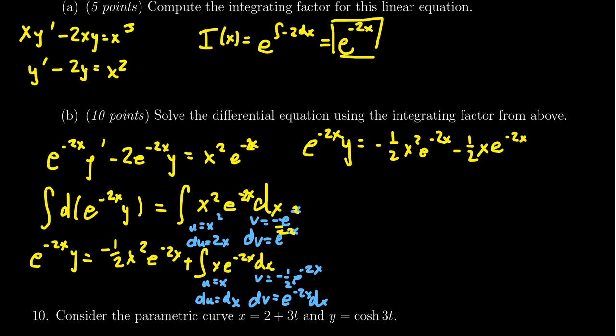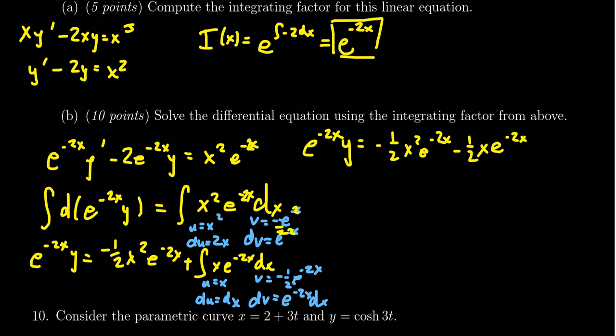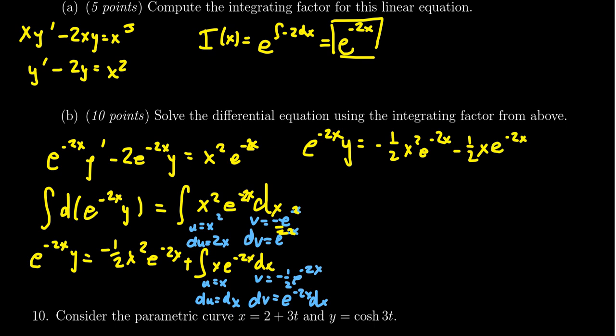Then for the remaining integral, we get a positive sign again due to the double negative, but the one-half does not cancel this time. We get one-half times the integral of e to the negative 2x dx, so we need to do one more integral.